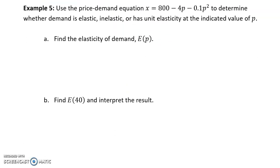In Example 5, we have another price-demand function. Again, we calculate our elasticity of demand function. Here we get 4p + 0.2p² over 800 - 4p - 0.1p².